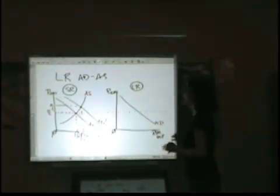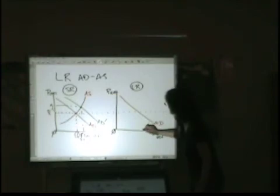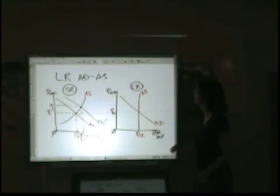So what happens is that in the long run, aggregate supply does not slope upward anymore. It's going to be vertical.